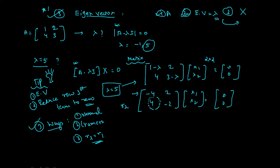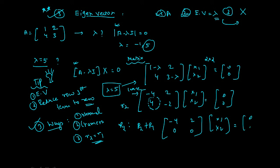Let's do it here. Leave the first row. Now the second row has the term 4, which I am trying to make 0. Let row 2 = row 2 + row 1. Row 1 is unaffected. For row 2: 4 + (−4) = 0, and −2 + 2 = 0. So we get [−4, 2; 0, 0] times [x1; x2] = [0; 0]. Making this an equation: −4x1 + 2x2 = 0, which simplifies to 2x1 = x2.